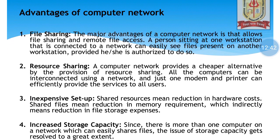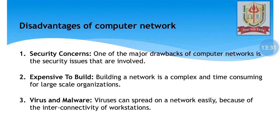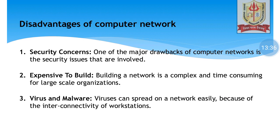Advantages of computer network: we can share files from one PC to another, share resources such as a printer or expensive software across all 20 PCs, making it inexpensive — one printer is sufficient for all 20 PCs. Increased storage capacity: if each PC has one terabyte and there are 20 PCs, it sums to 20 terabytes since all devices work in combination. Speed is fast. Disadvantages: security is a concern, sometimes an expensive setup is required for MAN and WAN — metropolitan area network and wide area network — and viruses and malware are also a concern.